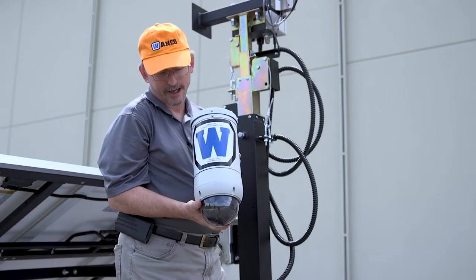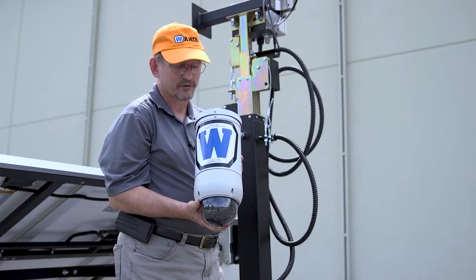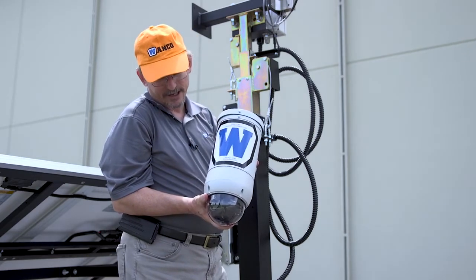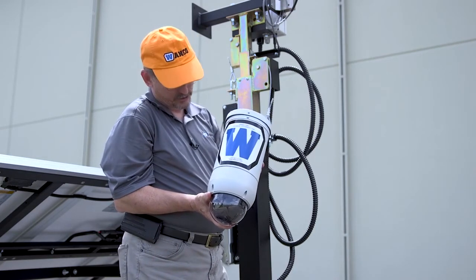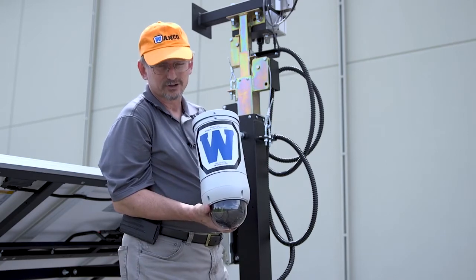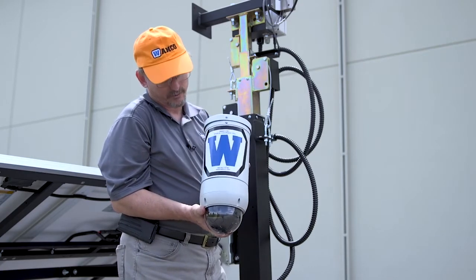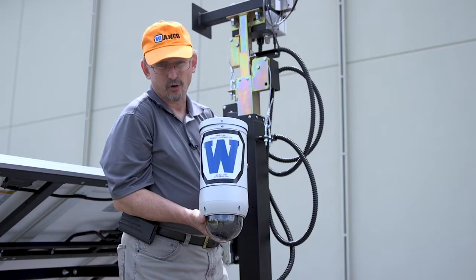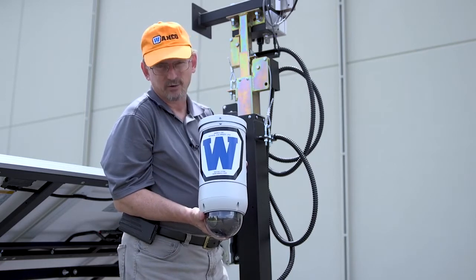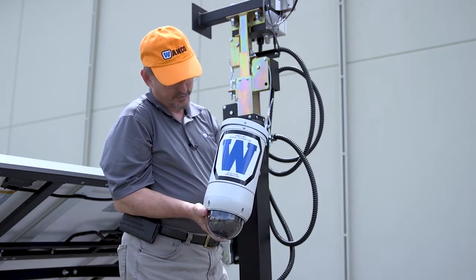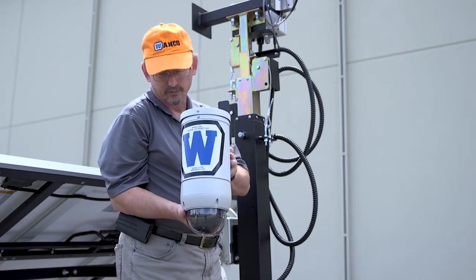Here we have the mini dome camera just taken out of its travel case. This little camera has a pan-tilt-zoom camera to it. It has a one terabyte recorder as part of it built in. It has a cellular modem built in, it has a Wi-Fi radio built in, and has GPS. Everything comes in this simple little camera.